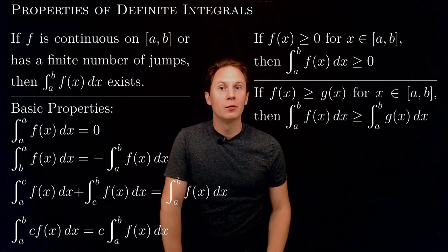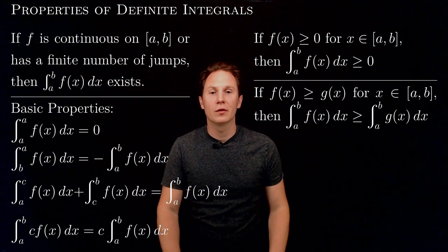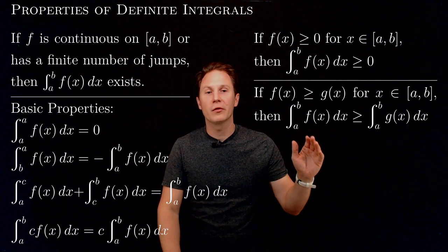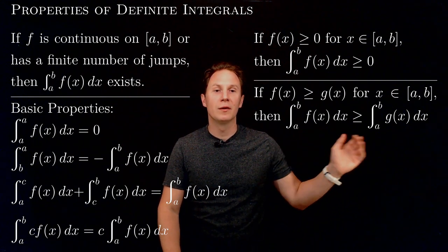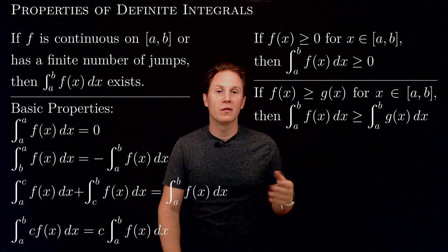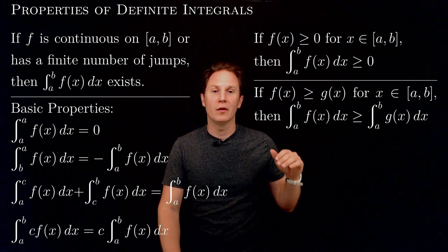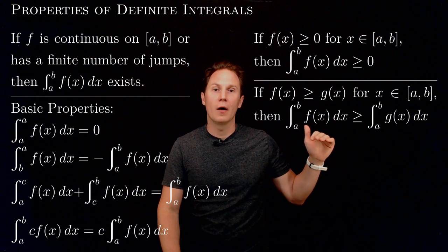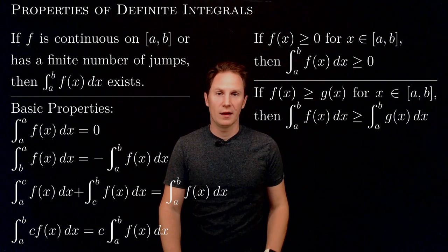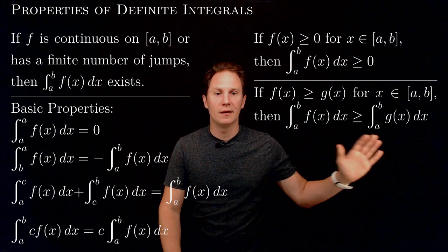If f(x) is greater than or equal to another function g(x) on this closed interval, then the definite integral from a to b of f(x) is greater than or equal to the definite integral from a to b of g(x). This expresses the simple fact that if the graph of f is at the same height or above the graph of g, then the signed areas underneath these graphs are related in the same way.